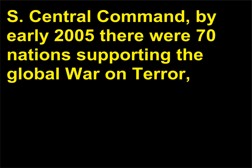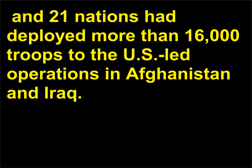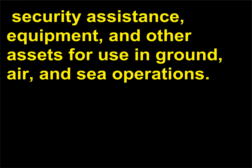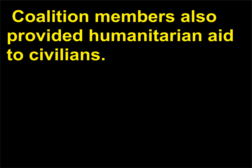According to the U.S. Central Command, by early 2005 there were 70 nations supporting the global war on terror, and 21 nations had deployed more than 16,000 troops to the U.S.-led operations in Afghanistan and Iraq. Coalition forces contributed in a variety of ways, including providing intelligence, personnel, security assistance, equipment, and other assets for use in ground, air, and sea operations. Coalition members also provided humanitarian aid to civilians.